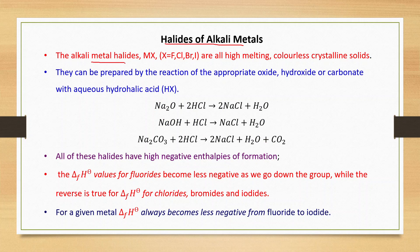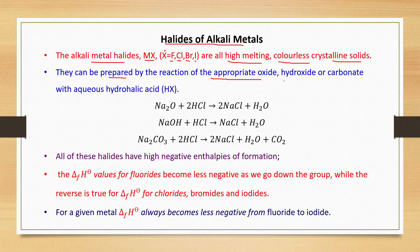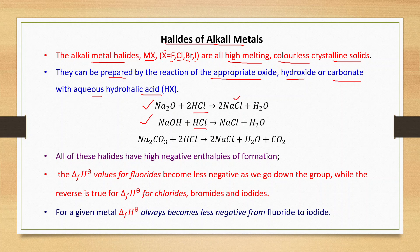Now, halides of alkali metals. The alkali metal halides have the general formula MX, where X may be F, Cl, Br, or I. They are all high-melting, colorless crystalline solids. They can be prepared by the reaction of the appropriate oxide, hydroxide, or carbonate with the hydrohalic acid. For example, sodium oxide reacts with HCl to give NaCl, NaOH reacts with HCl to give NaCl, and Na₂CO₃ reacts with HCl to also give NaCl.